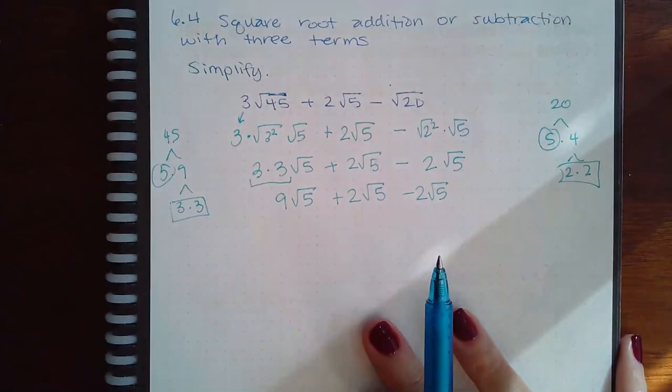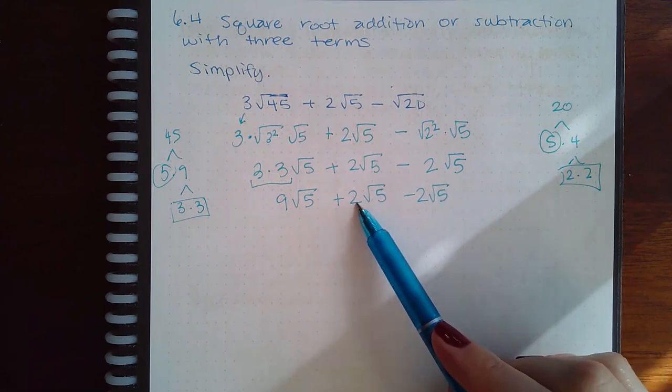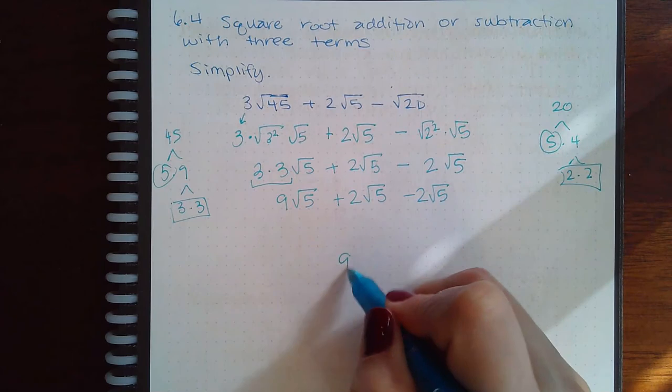Now, be careful here. Yes, these do cancel. 2 square root of 5 positive and then a negative. They do cancel. So I will end up with the 9 square root of 5.